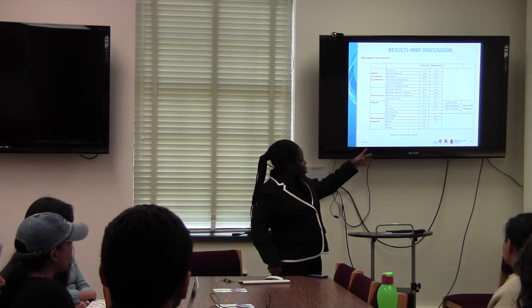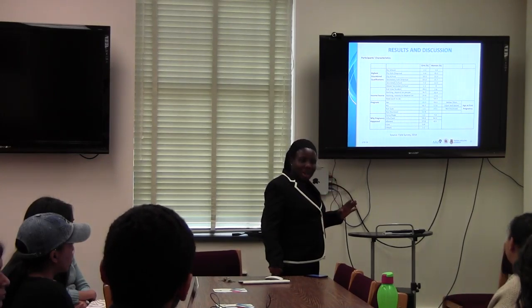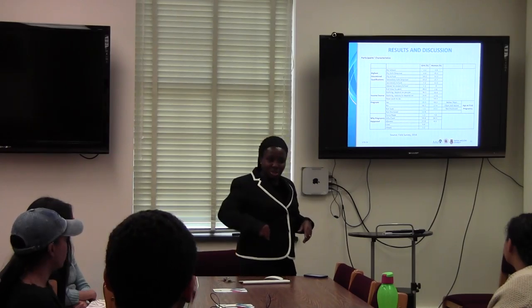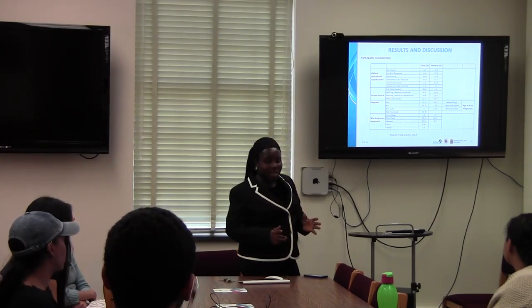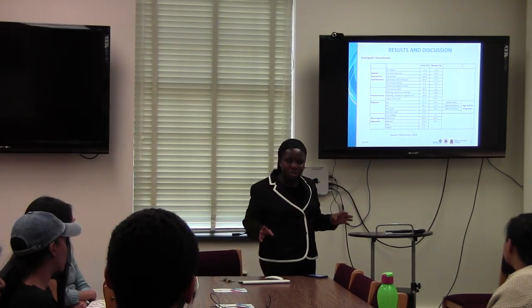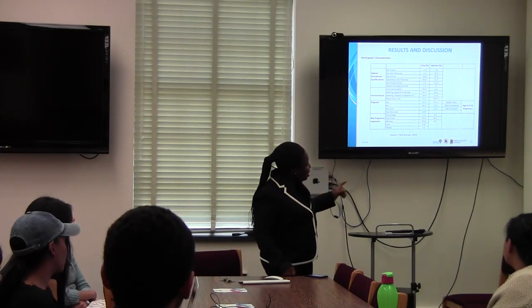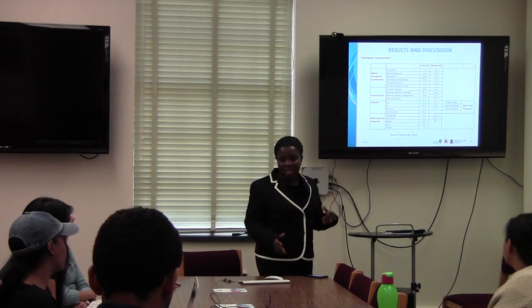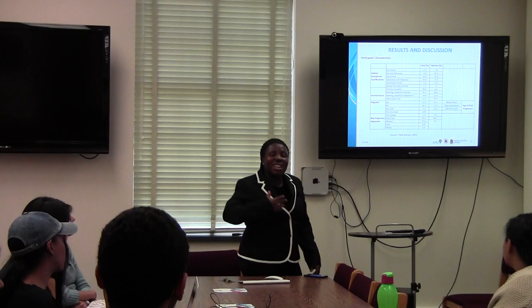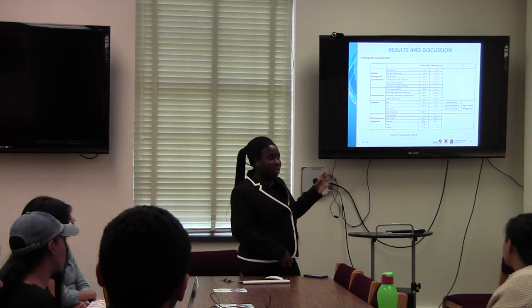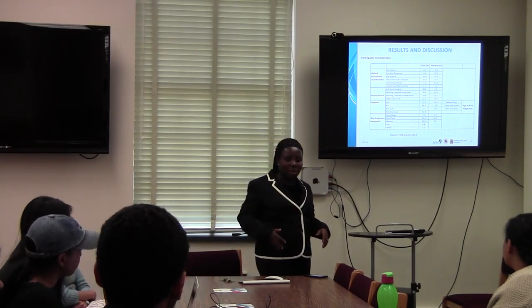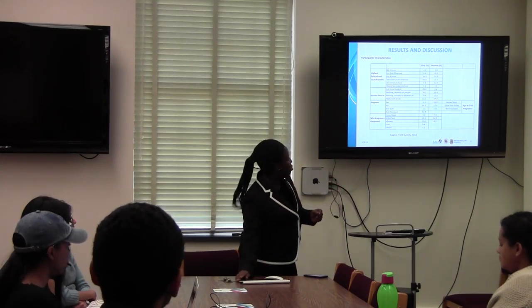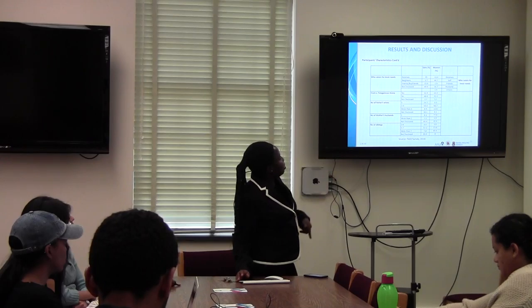When asked why pregnancy happened, both girls and women said it is gifts and cash — they are being enticed. Because of the high rate of poverty, they need something. And because they cannot make decisions for themselves — they are not empowered — they are forced into it. Most girls did not disclose who caters for most of their needs, possibly because they have illegal arrangements they don't want revealed. The women said they cater for themselves — they do not rely on their husbands.